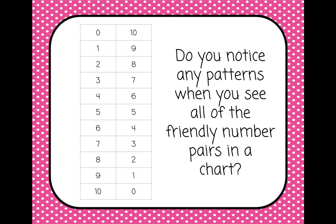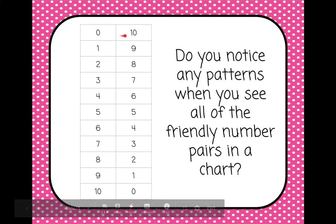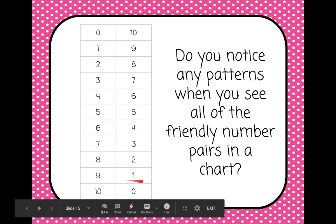Let's take a look at this chart. We have the friendly numbers set up like this: zero and ten are our first set of friendly numbers. Then we have one and nine, two and eight, three and seven, four and six, five and five, six and four, seven and three, eight and two, nine and one, ten and zero.